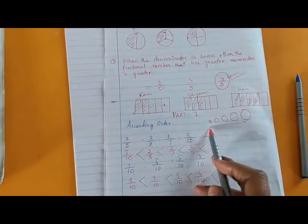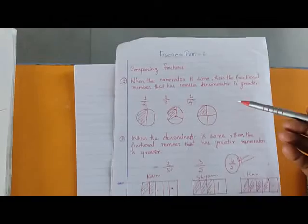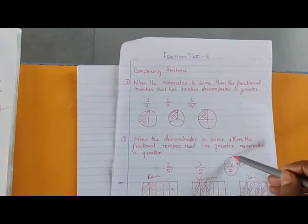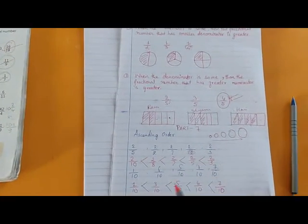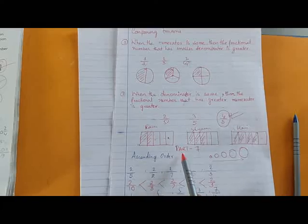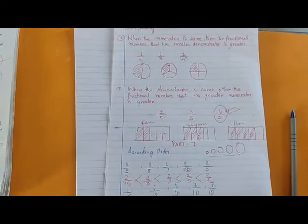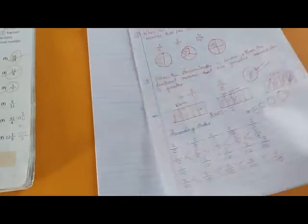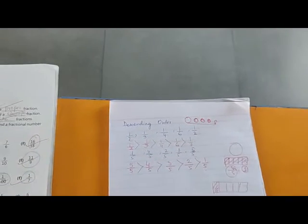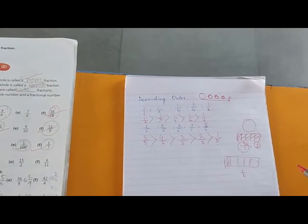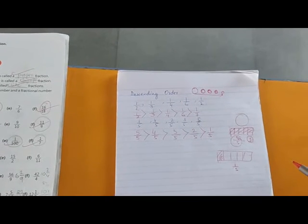The thing to keep in mind: descending order means arrange from bara to chota, and ascending order means arrange from chota to bara. These two rules are very very crucial and important if you want to solve ascending and descending order questions. I hope Part 7 is clear. In the next and last video — Part 8 — I will explain addition and subtraction of fractional numbers. Take care.